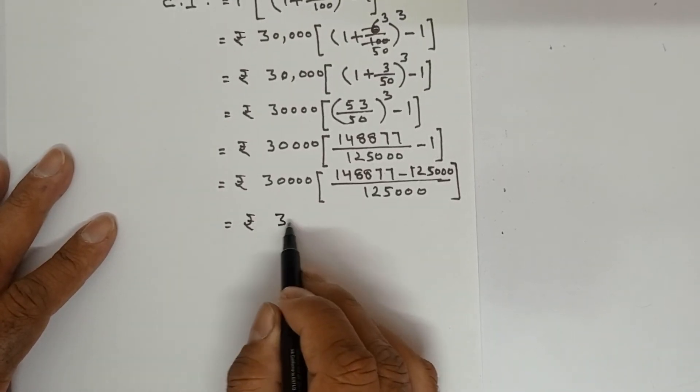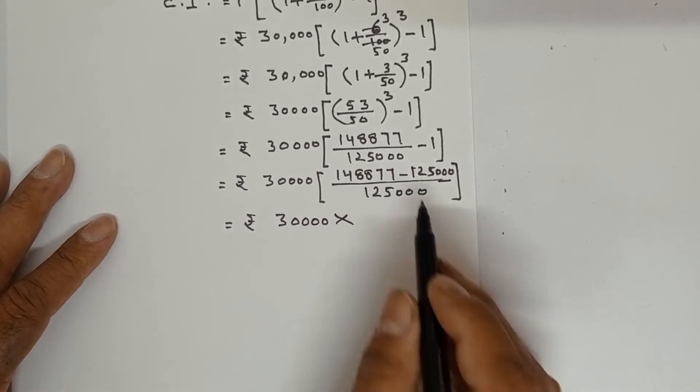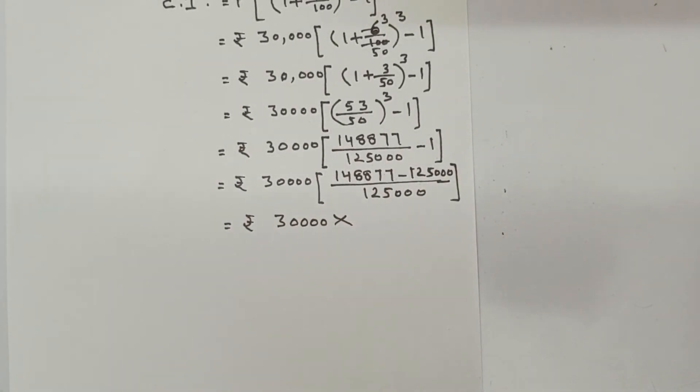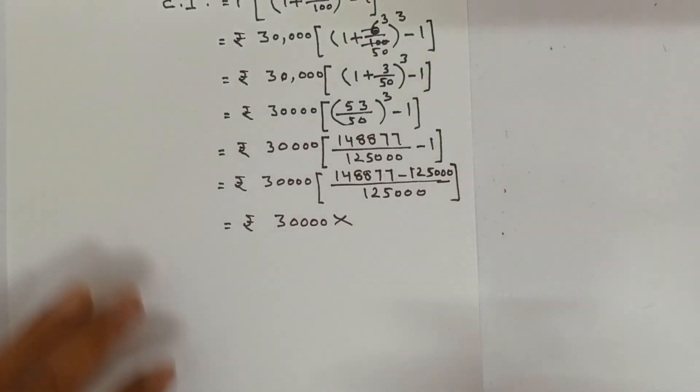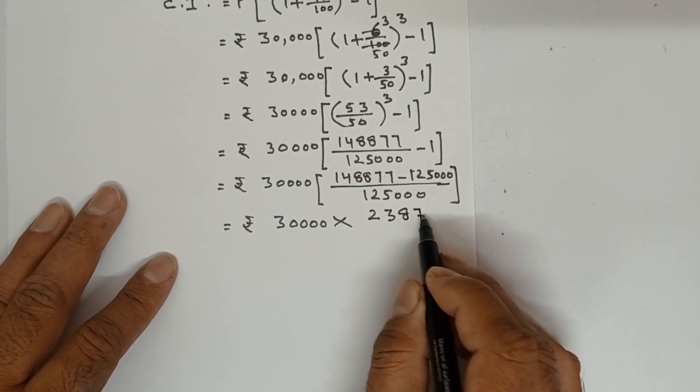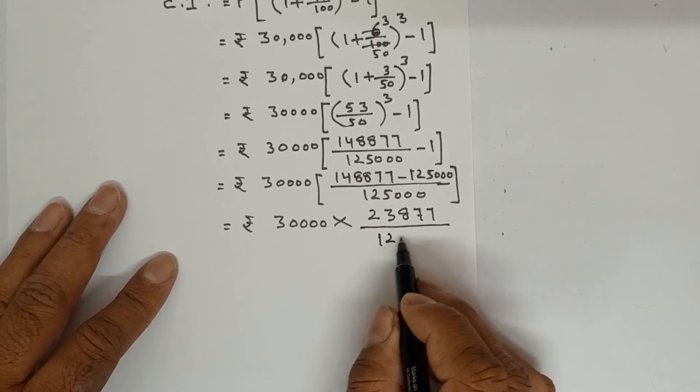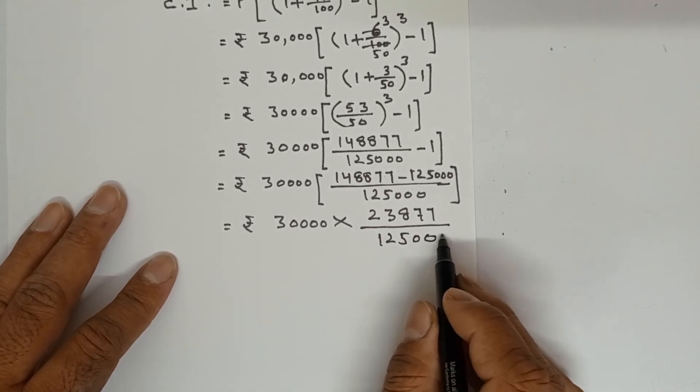Now Rs. 30,000 times, subtraction should be done. 148,877 minus 125,000. You will get 23,877 upon 125,000.